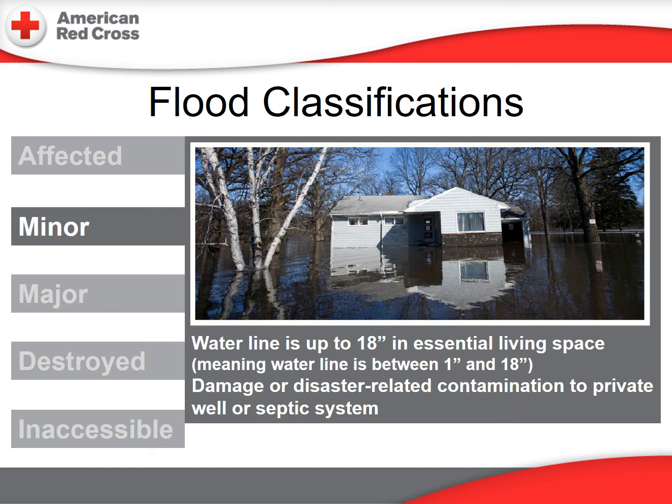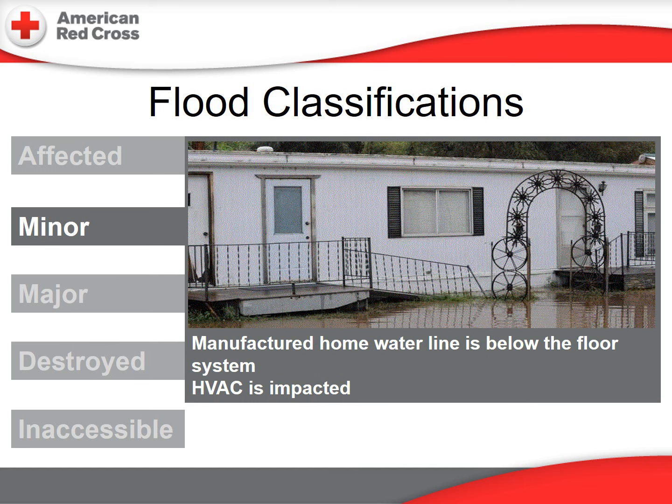This home would be classified as minor. The water level inside the essential living space is somewhere between 1 and 18 inches. It also can mean that as a result of the flood, the private well or septic system has been compromised. This manufactured home has a water line below the floor system, and perhaps the HVAC is impacted — it qualifies for a minor damage classification.